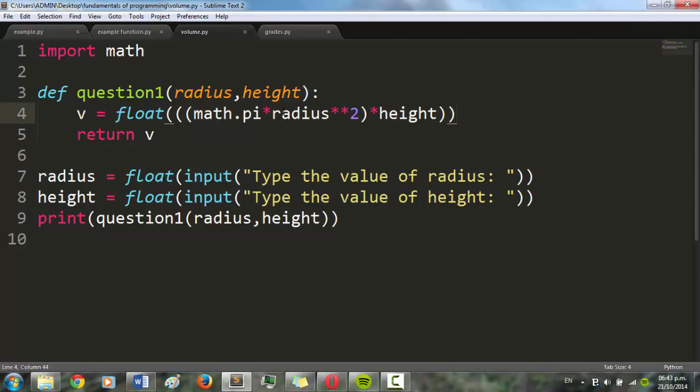...multiplying the value of pi by the radius squared, and then that value times the height. So I'm just in this case printing the volume of the cylinder.